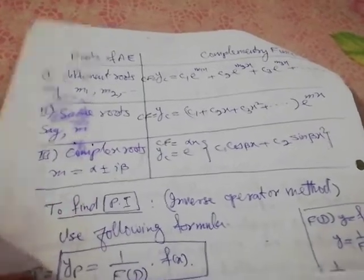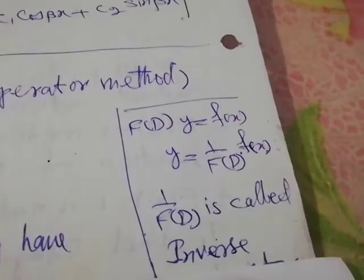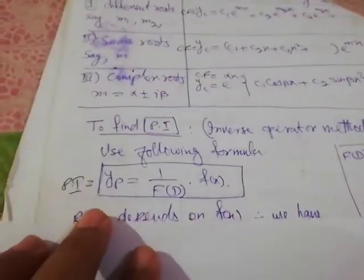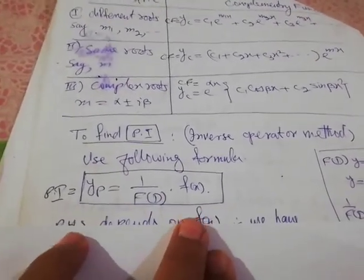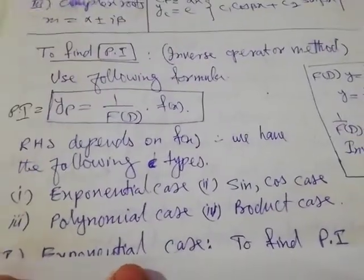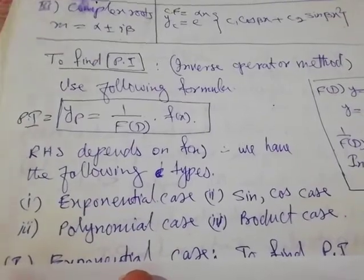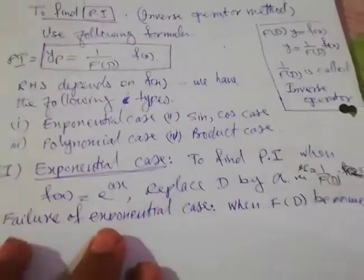For the particular integral, we write yp = (1/f(D)) times f(x), where 1/f(D) is called the inverse operator method. The right-hand side f(x) can be of several types: exponential, sine/cosine, polynomial, or product. For the exponential case, when f(x) = e^(ax), we simply replace capital D by a in 1/f(D).